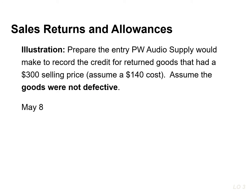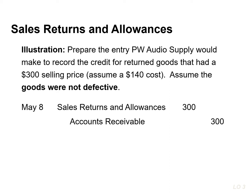PW Audio Supply's entries to record credit for returned goods involves an increase or debit to sales returns and allowances, and a decrease or credit to accounts receivable for $300, which is the selling price. We also need to record the cost, and if we assume the cost is $140, then we're going to increase or debit inventory and decrease or credit cost of goods sold.